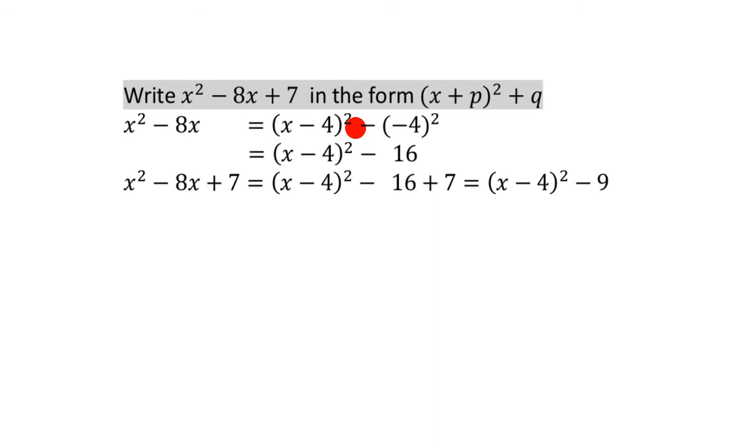But yeah, so that's a bit too much, isn't it? x minus 4 all squared doesn't give you x squared minus 8x. It gives you x squared minus 8x plus 16. That's why you have to take away the square of this number, which is 16 basically. So you take away the 16. So this stuff equals this stuff. So anyway, we've completed the square for x squared minus 8x. It's this stuff here, x minus 4 all squared minus 16.